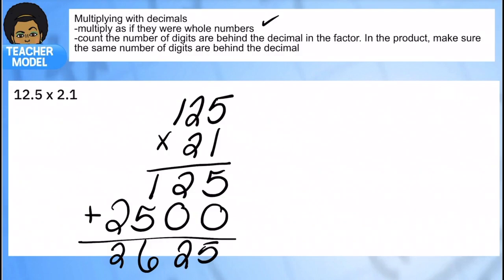For part two, I'm going to count the number of digits that are behind the decimal in my factors. So take a look here. These are my factors right here. And I'm going to count how many digits are behind the decimal, to the right of the decimal. Well, two are.